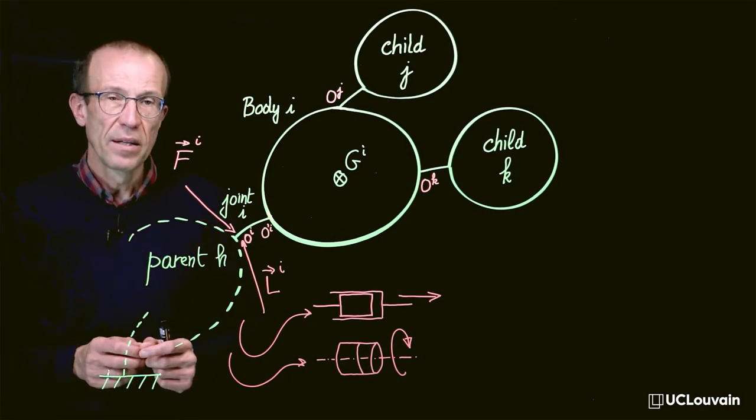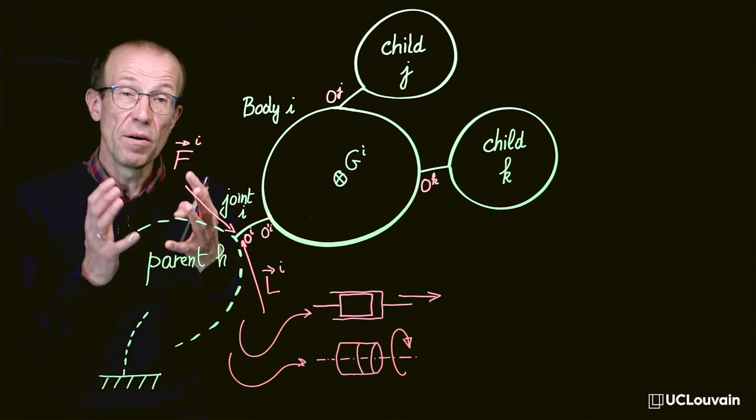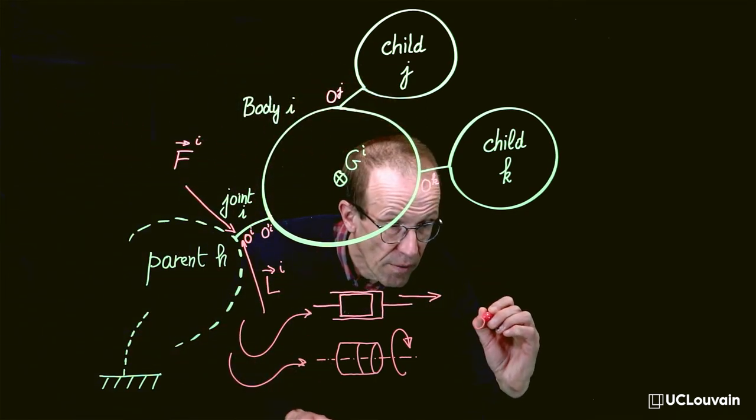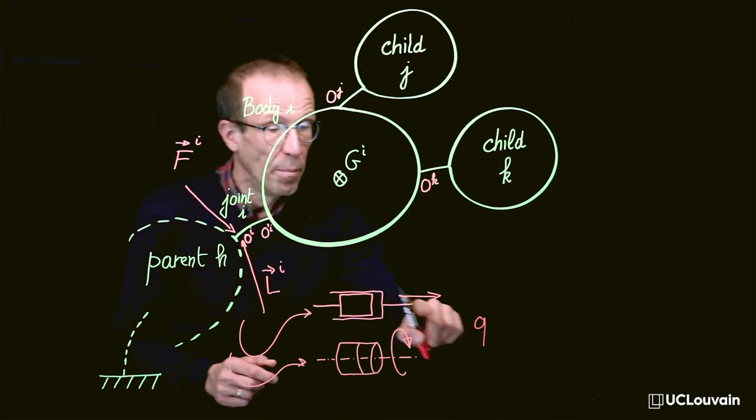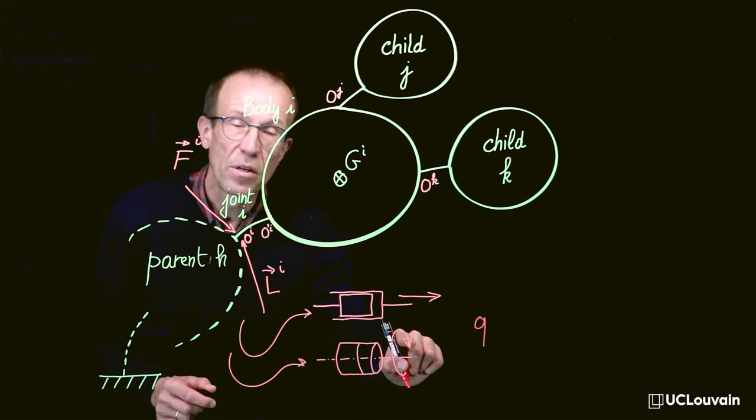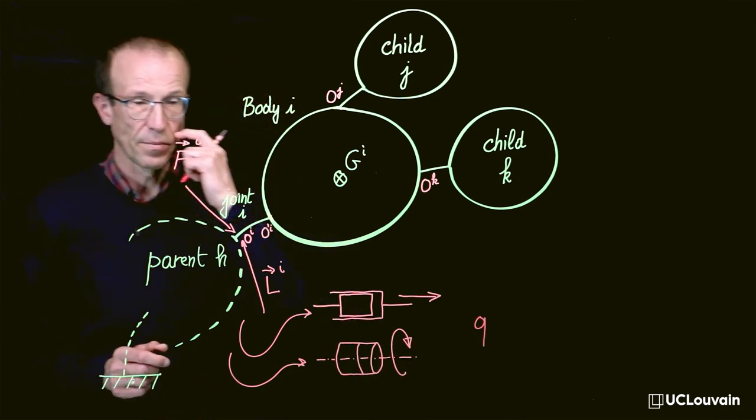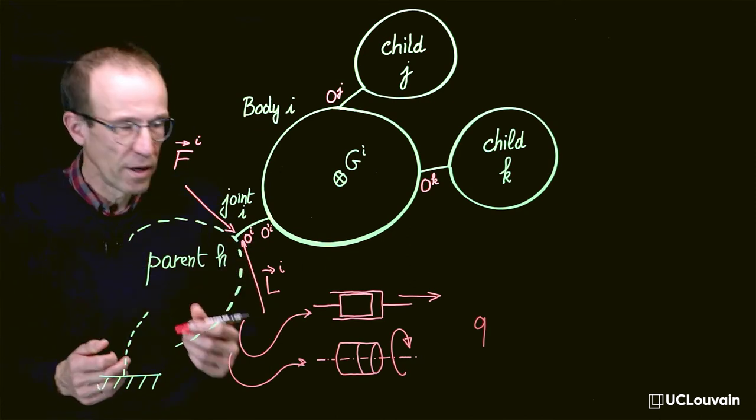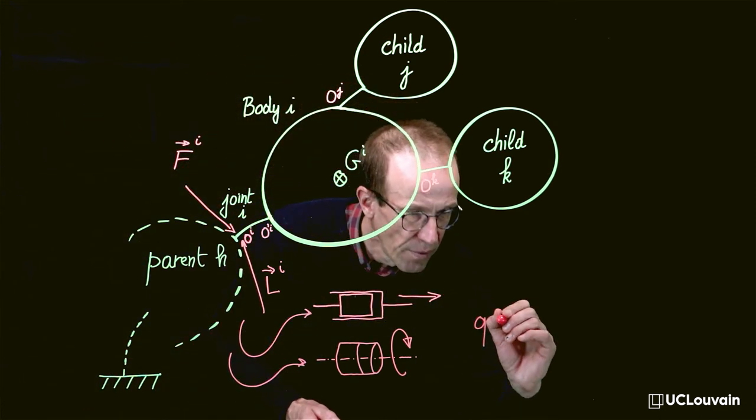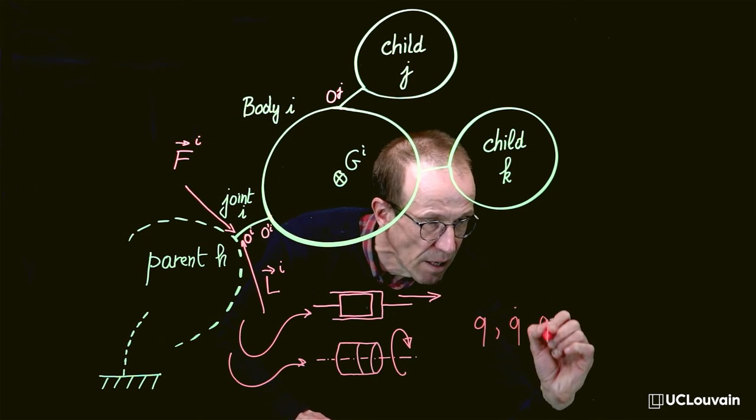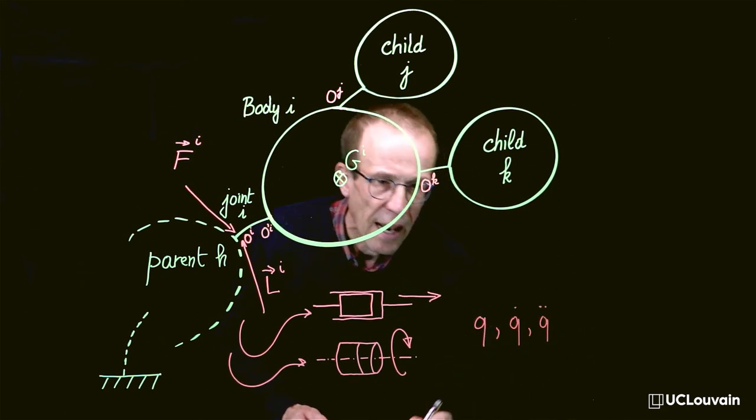The relative motion within joints will define our joint generalized coordinates denoted q. The unit will be meter for linear displacement and radian for revolute angular displacement. They will represent our system variables and will be expressed at position, velocity and acceleration levels.